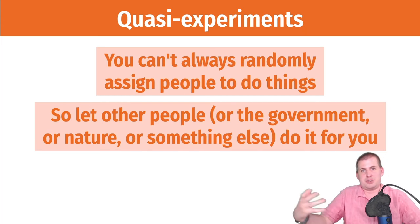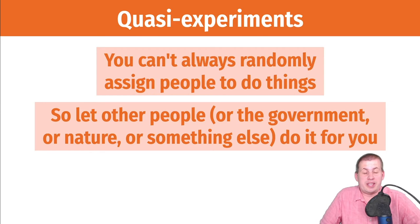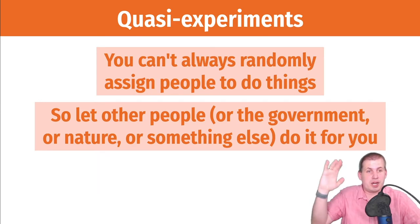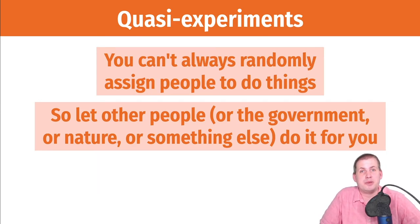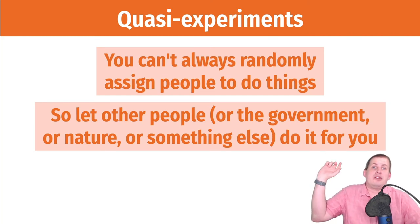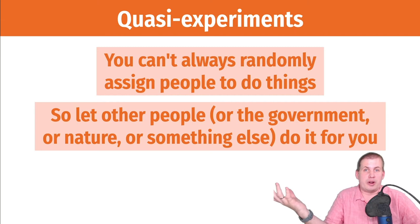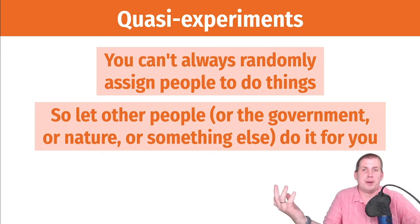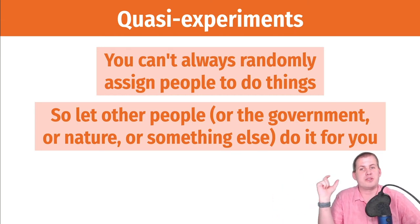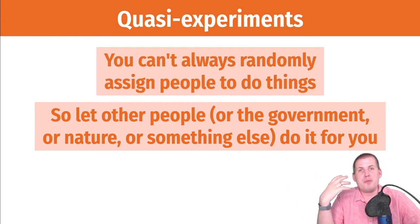In the case of the Oregon Medicaid expansion experiment, the researchers didn't do the actual assignment — the government did through their system — but the researchers jumped on board and used that as a quasi-experiment to study the effect of gaining more access to healthcare on various outcomes. These are examples of quasi-experiments.